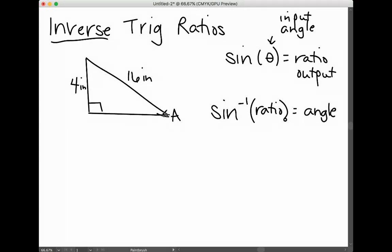Say we're looking at this example right here—we want to find out what angle A is. We don't know what theta is for angle A, but we know that the sine of that angle equals the opposite over the hypotenuse, 4 inches over 16 inches, which equals 1/4.